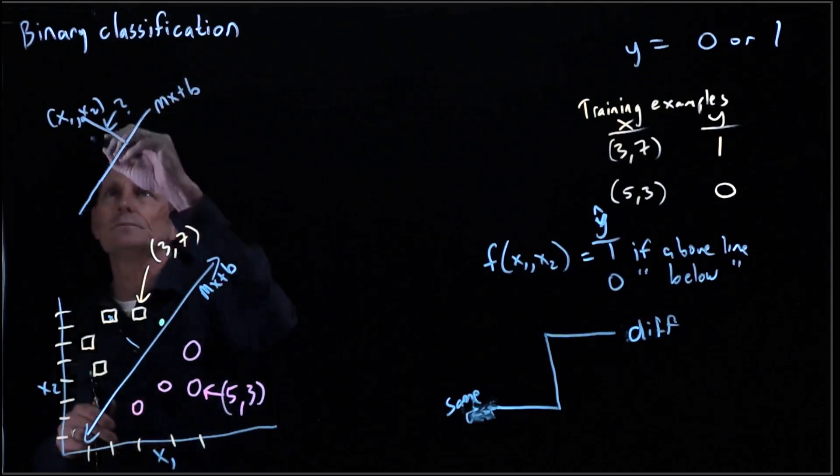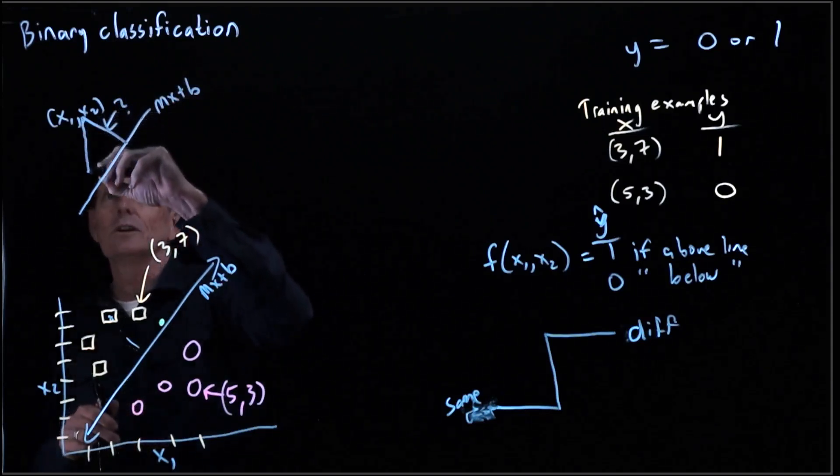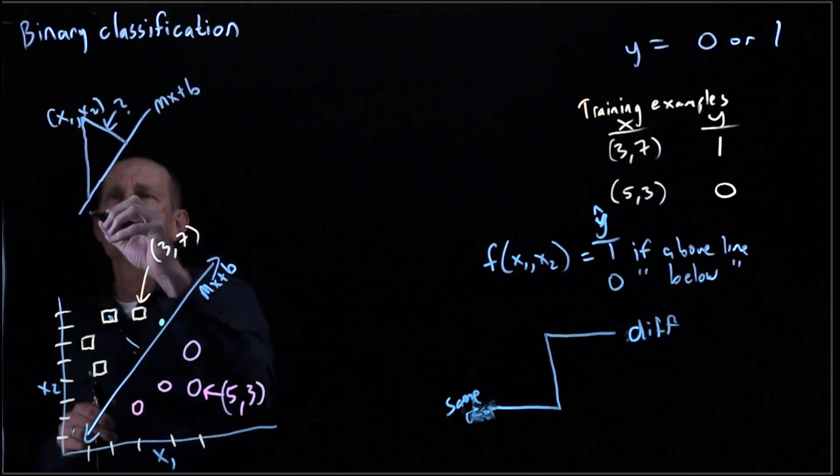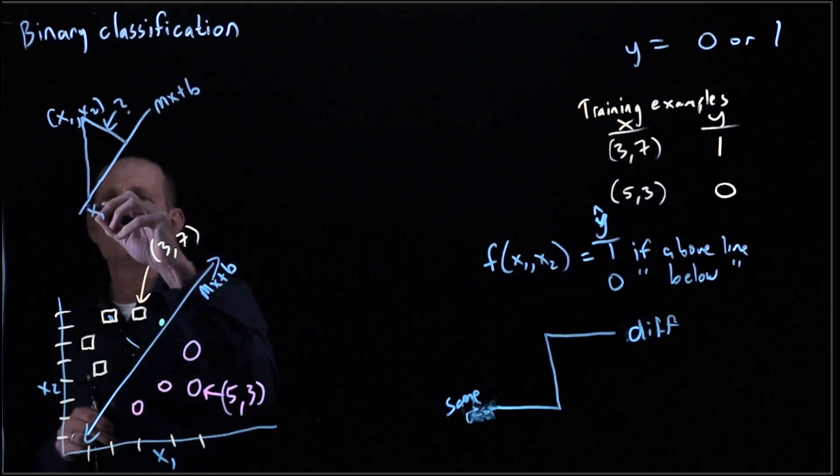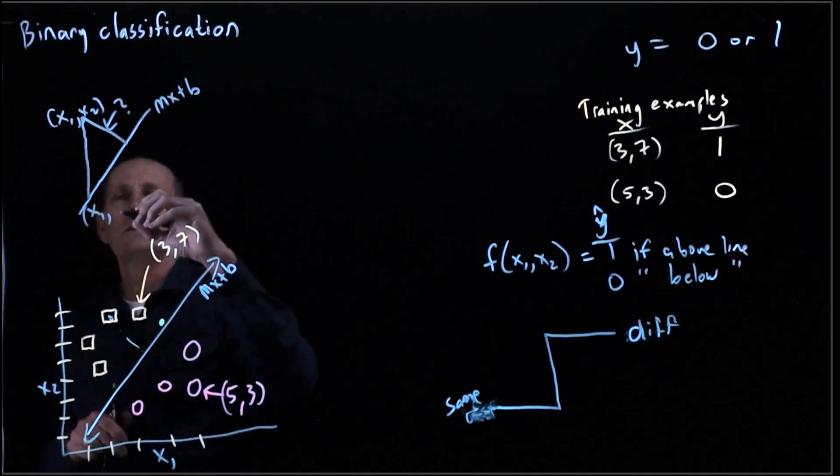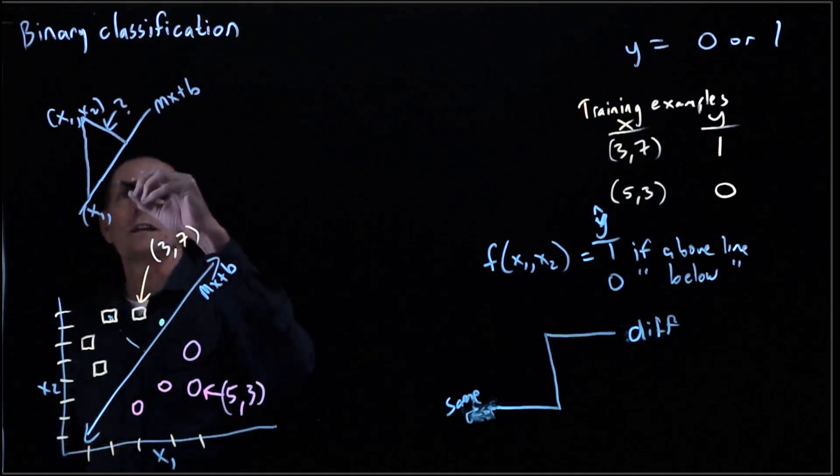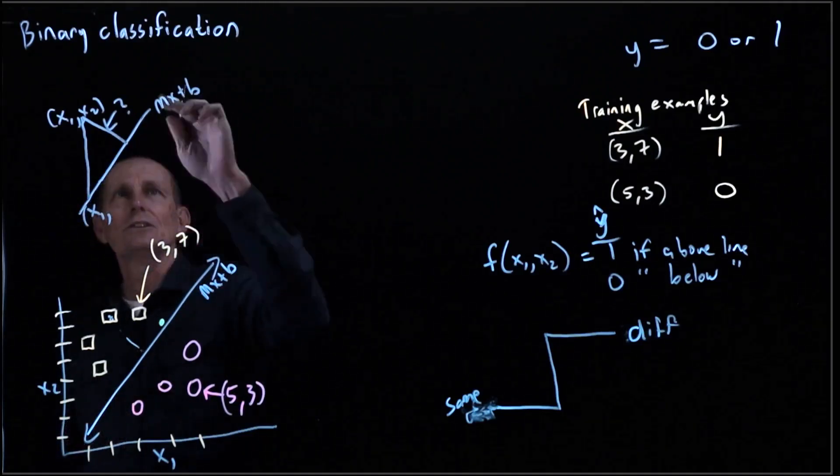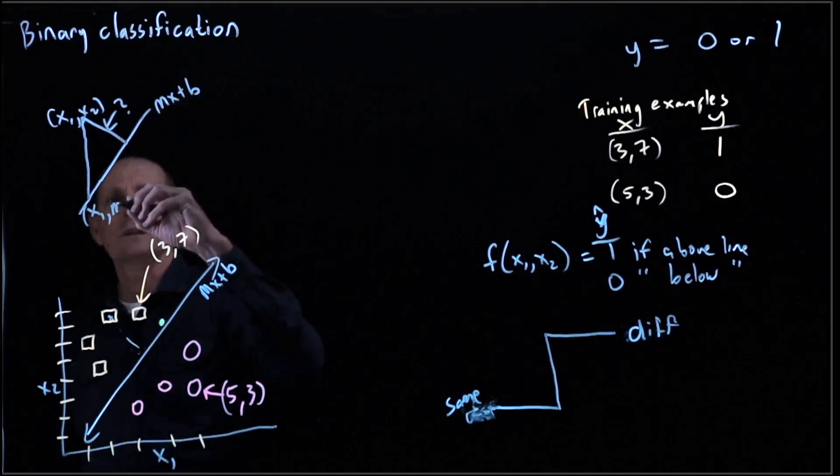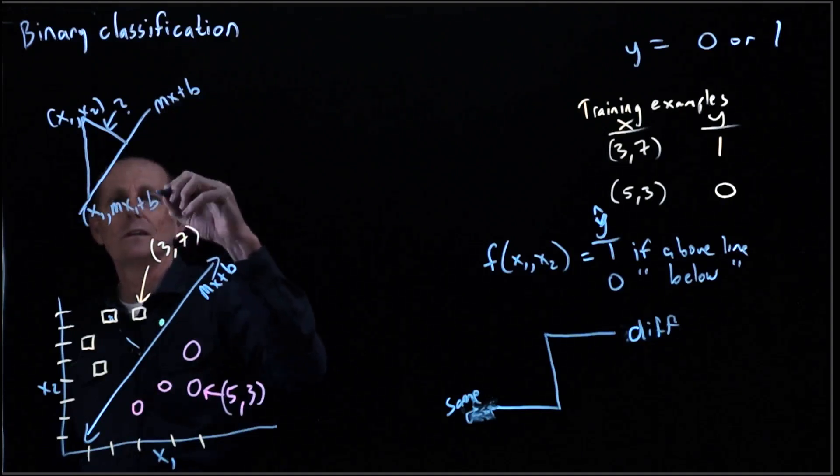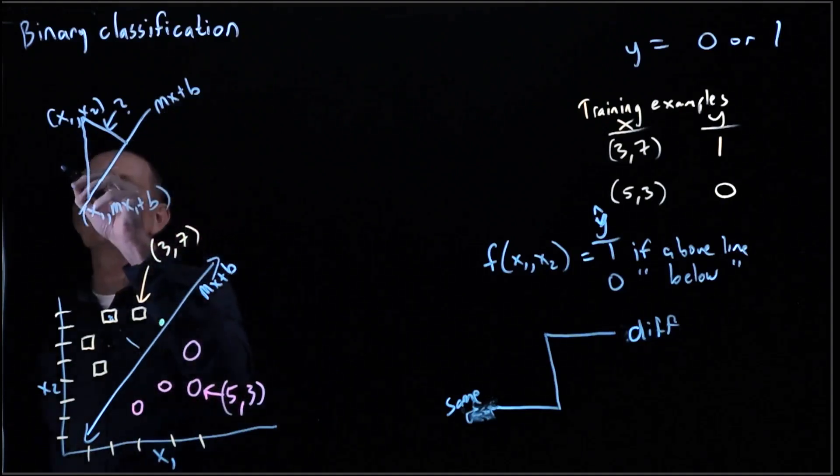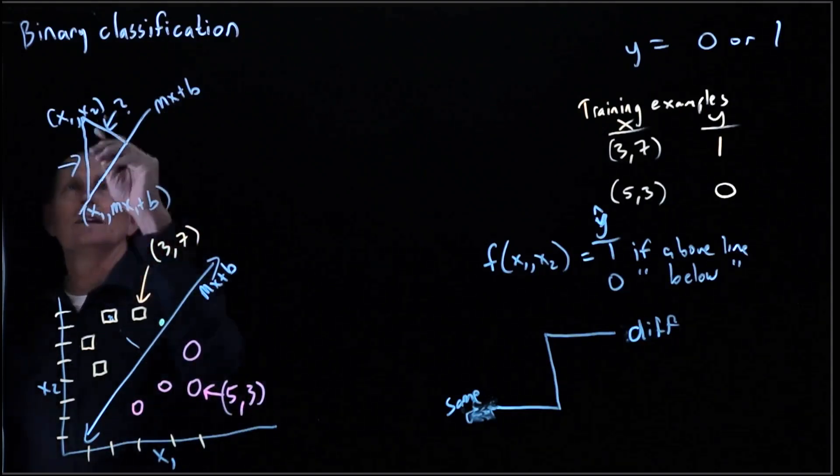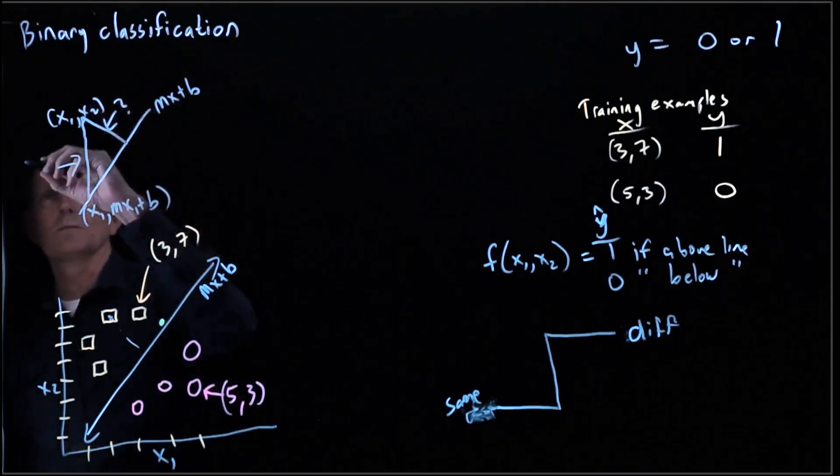Well, what do we know? We know if we drop a vertical line here that this is also x1. But the second parameter is actually on this line. So it must be mx plus b. So we know that this distance here is x2 minus mx plus b.